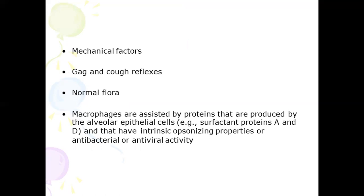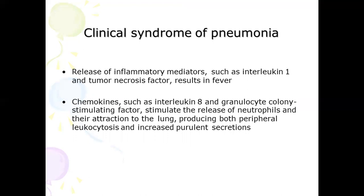The gag and cough reflex are essential for effective clearance and killing of microorganisms. When all these barriers are overcome and microbes are very small, they can reach the alveoli. In the alveoli there is also a defense mechanism — alveolar macrophages act to kill and clear pathogens, assisted by surfactant proteins A and D produced by alveolar epithelial cells, which have intrinsic opsonizing properties or antiviral activity. It is the host inflammatory response that causes all the clinical syndrome of pneumonia rather than the proliferation of the microorganism itself.